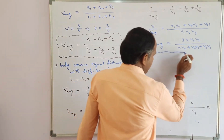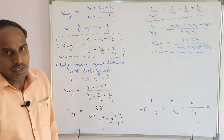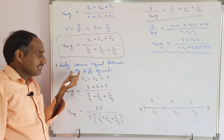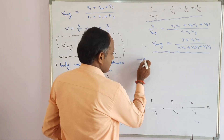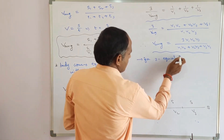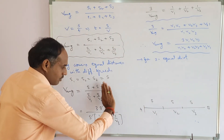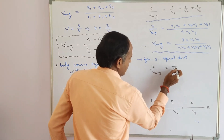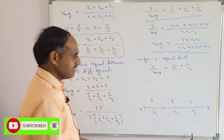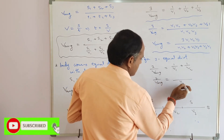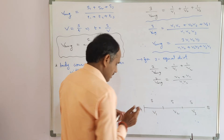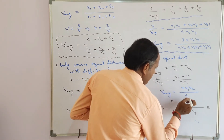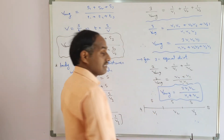When three equal distances are covered at different speeds, use v_avg = 3v1v2v3 / (v1v2 + v2v3 + v3v1). For two equal distances covered at different speeds, the formula simplifies to 2/v_avg = 1/v1 + 1/v2, which gives v_avg = 2v1v2 / (v1 + v2). The harmonic mean of individual speeds gives the average speed when covered distances are equal.